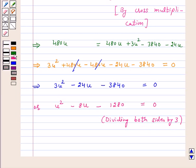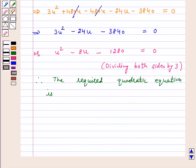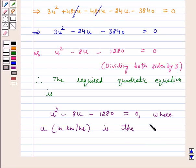Therefore the required quadratic equation is u square minus 8u minus 1280 is equal to 0, where u in kilometer per hour is the speed of the train.